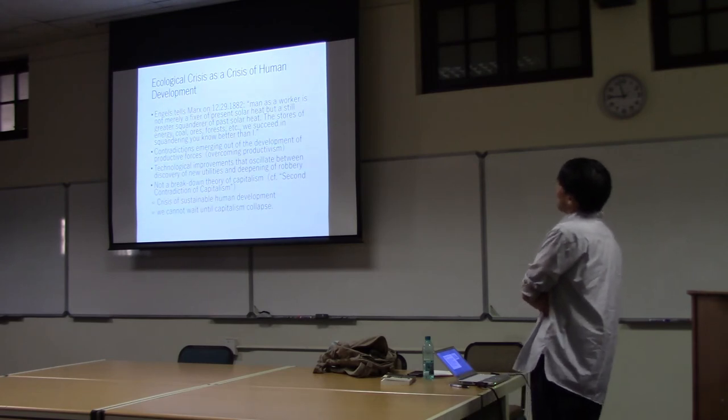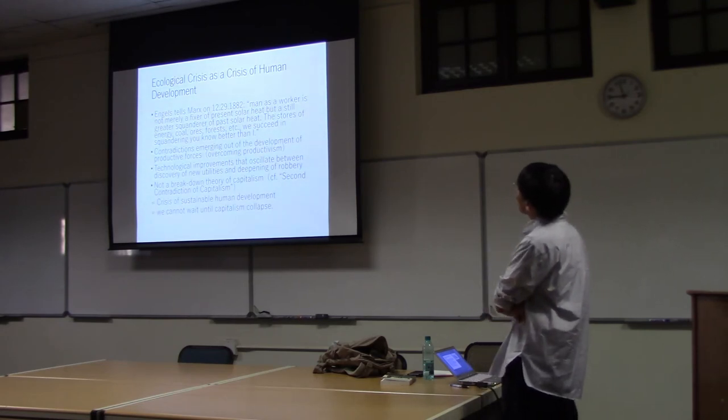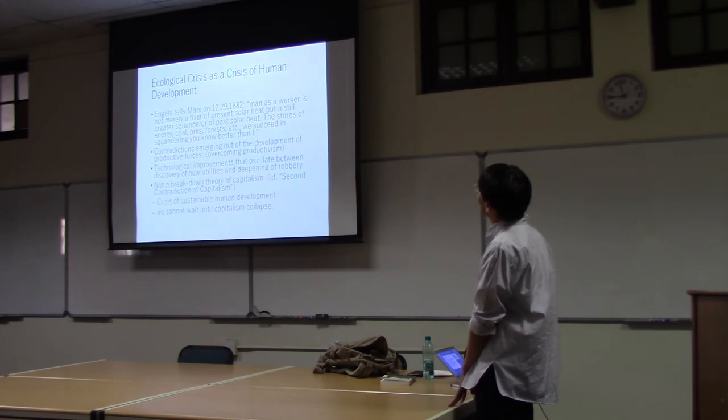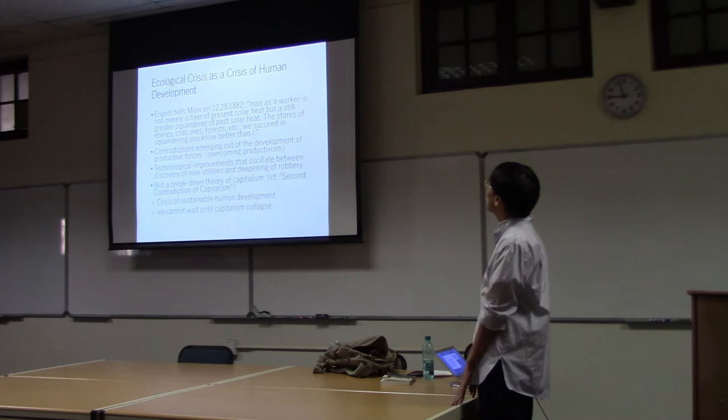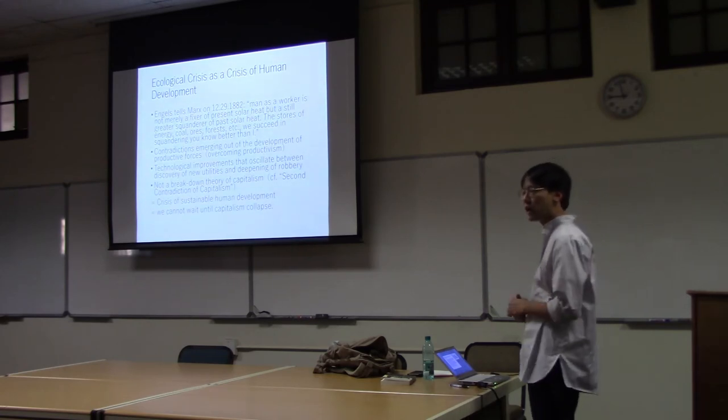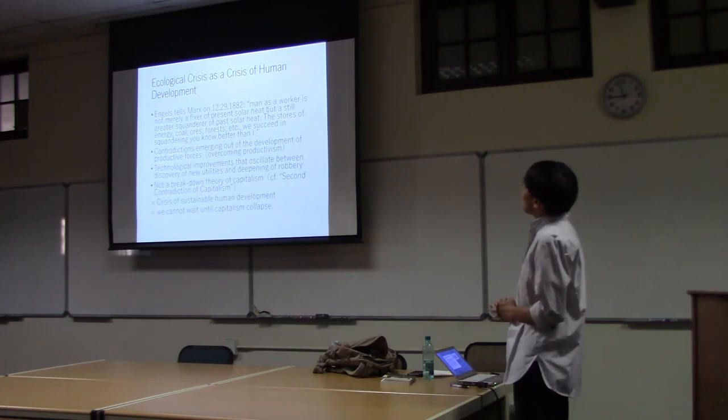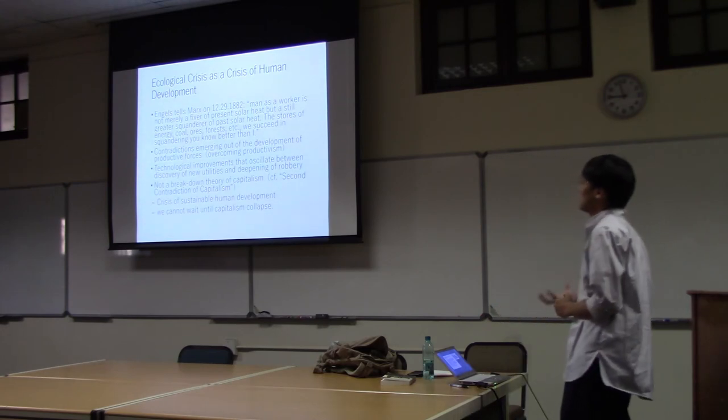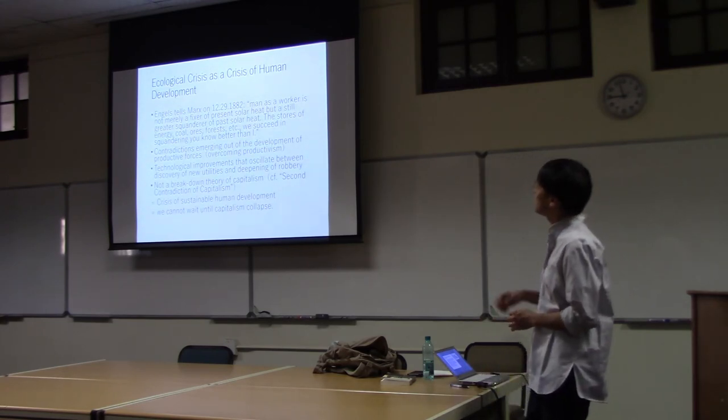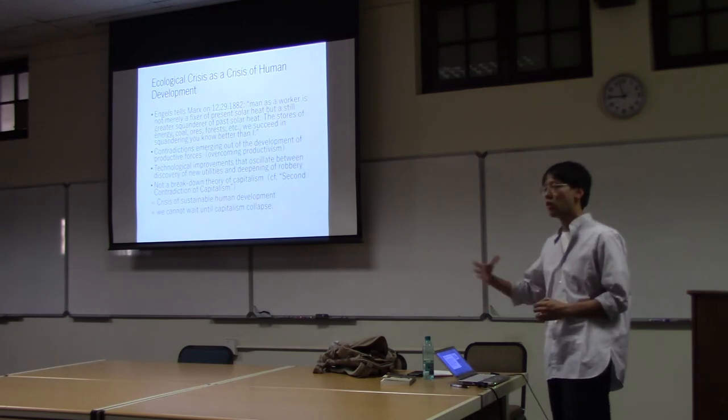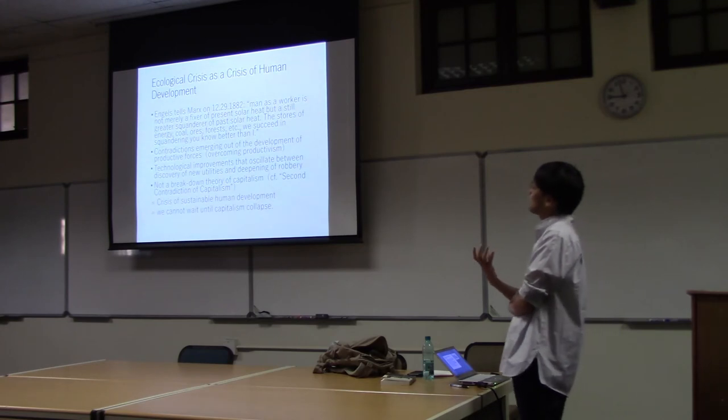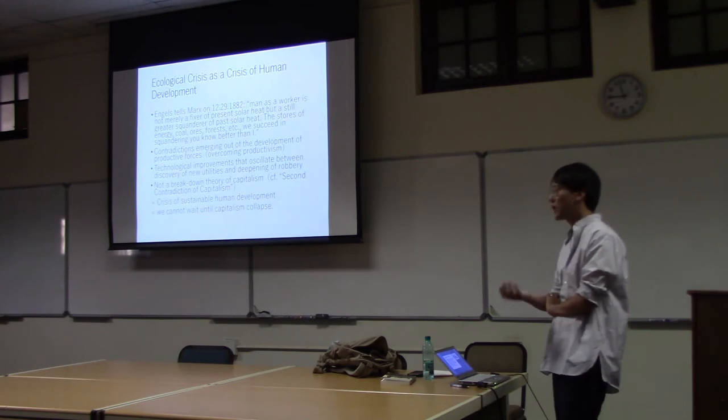After Marx studied so hard this natural science, he realized that Liebig was there, but in 1882, almost the last year of Marx's life, he writes: Man as a worker is not merely a heat producer but also a squanderer. Past solar heat stored as energy - coal, forest, etc. - we succeed in squandering.